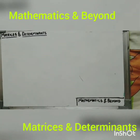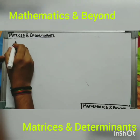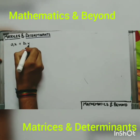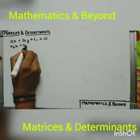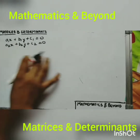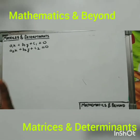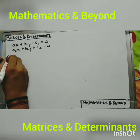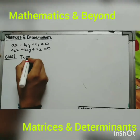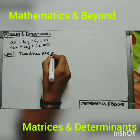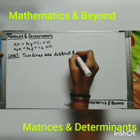From the cross multiplication rule we learned, for the system a1x plus b1y plus c1 equal to 0 and a2x plus b2y plus c2 equal to 0, there can be three cases: the lines can be intersecting, parallel, or coincident. In case one, we assume that the two lines are distinct — meaning they will not coincide — and not parallel.